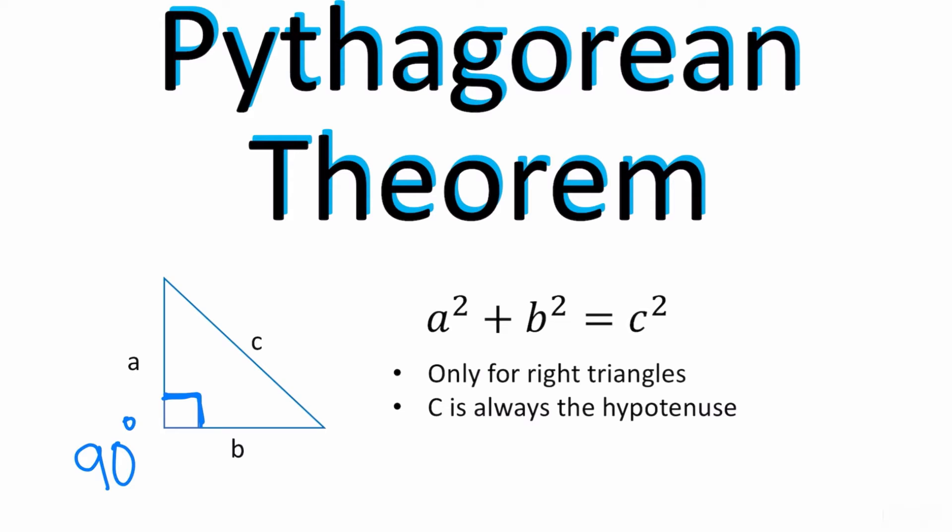You can only use the Pythagorean Theorem for right triangles. If the triangle is not a right triangle, then you should not be using the Pythagorean Theorem. Notice this right here is the hypotenuse. The hypotenuse is the longest side of the triangle. It's always opposite from the 90 degree angle.